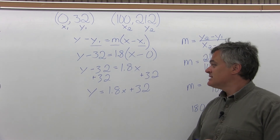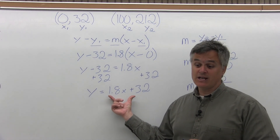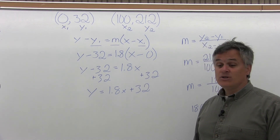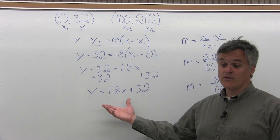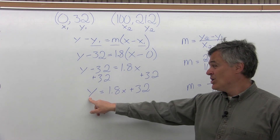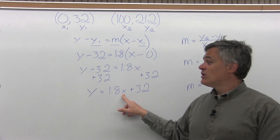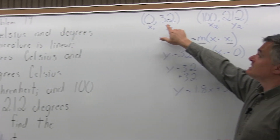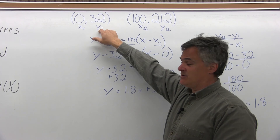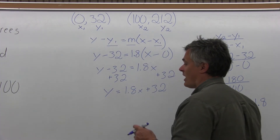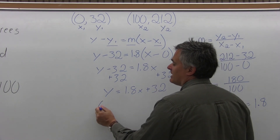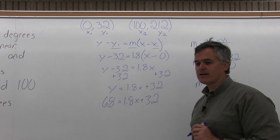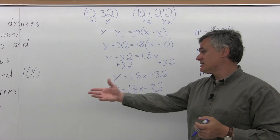The last part of the problem says to use the linear equation to find the Celsius temperature for 68 degrees Fahrenheit. I need to put 68 into the formula and solve for the other variable. Since 68 is in Fahrenheit, and Fahrenheit lines up with the y value in the way I wrote the coordinates, I substitute 68 for y. So y equals 1.8x plus 32 becomes 68 equals 1.8x plus 32.